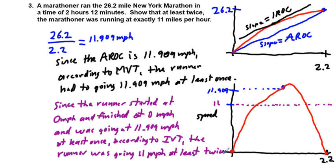We use the Mean Value Theorem and the Intermediate Value Theorem in conjunction to fully articulate and conclusively prove that yes, this runner was going at exactly 11 miles per hour at least twice.